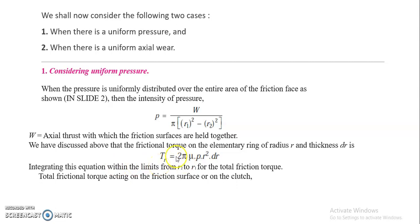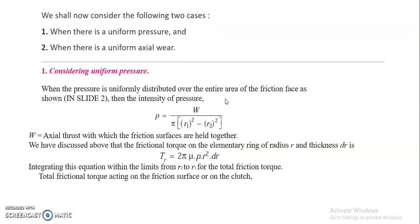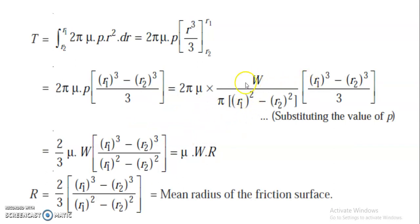Now we integrate this expression from R2 to R1. Substituting the value of P = W / [π(R1² − R2²)], the integration gives us T = 2πμW / [π(R1² − R2²)] × (R1³ − R2³)/3, which simplifies to T = (2/3) × μW × (R1³ − R2³) / (R1² − R2²).